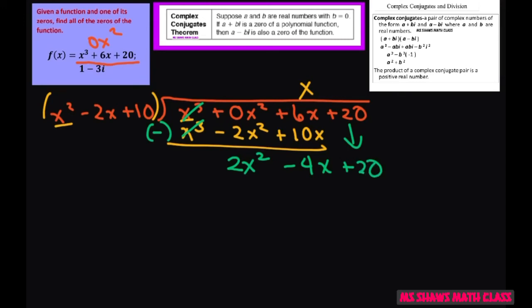Now you're going to ask the same thing. What times x squared gives me 2x squared? That's going to be plus 2. So we're going to multiply everything, all of this trinomial, by 2. And you get 2x squared minus 4x plus 20. And then we subtract. And all this is going to zero out.